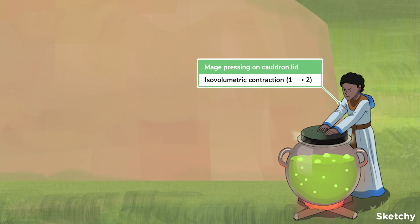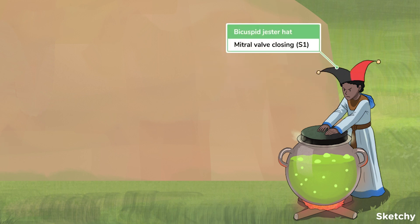See how this mage is holding down the top of this bubbling cauldron? Like isovolumetric contraction, this will increase the pressure inside but keep the volume of potion unchanged. As the ventricle contracts, the initial increase in pressure inside the ventricle will force the valve between the atrium and ventricle closed. This is the mitral valve in the left heart — hence our mage's bicuspid jester's hat — and the tricuspid valve in the right heart. In addition to producing the first heart sound, S1, this valve closure will leave the ventricle closed off from the rest of the cardiovascular system.